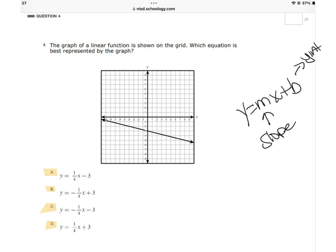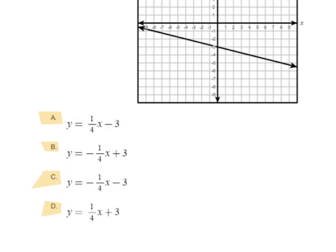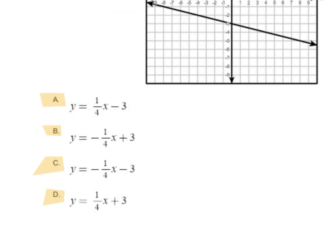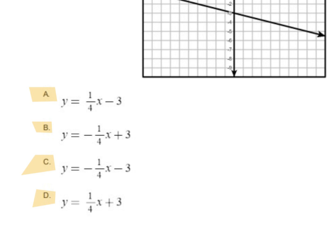So the first thing I notice about my slope is my slope is negative. So I'm going to go back to my answer choices. I need a slope that is negative. Remember, slope is attached to our x in slope intercept form. So let's see, a slope is positive, so I know a is not it.